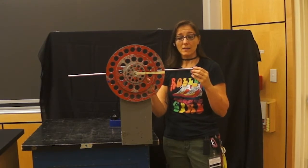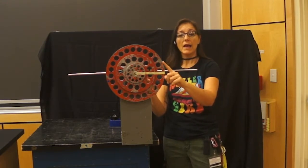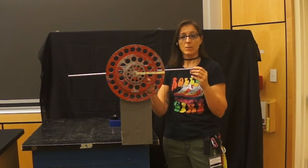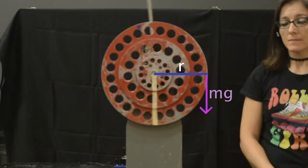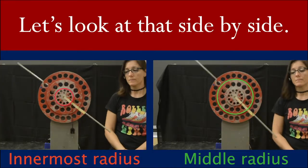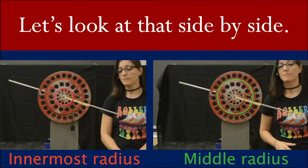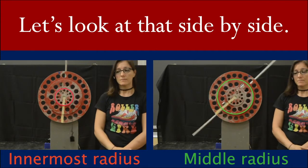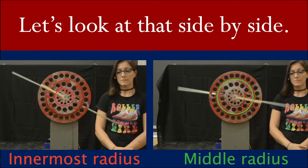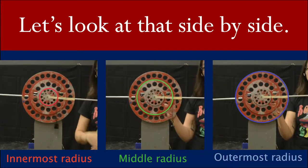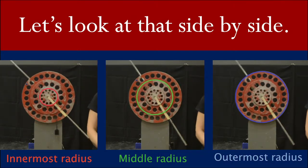Finally, we have the exact same mass hanging now at the outermost radius or the largest lever arm. Let's watch that motion. As you can see from looking at this, each time the 100-gram mass is able to get the system moving, but with the larger lever arm, it's able to get the system moving much faster than it would have if it had been at a smaller radius.